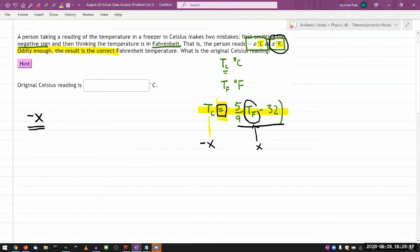So let me set up that equation. So I have minus X, the temperature reading in degrees Celsius, is equal to what the person mistakenly thought it was, the X degrees Fahrenheit. And let me do the conversion equation. Minus 32 times 5 ninths.